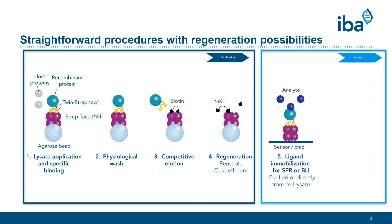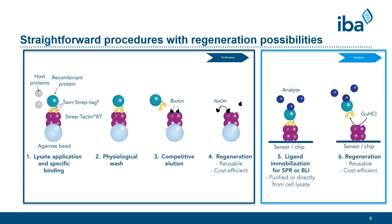The strong interaction between Streptactin XT and the twin-streptag can also be adapted for protein analysis, for example SPR. This technique can be used to determine protein properties such as affinity, concentration, interaction specificity, or binding kinetics. Again, the Streptactin XT coating on sensor chips can be regenerated for multiple uses, making the system convenient and cost-efficient. In addition, a dedicated purification step prior to analysis may be skipped, and the protein of interest can directly be studied from host cell lysate, saving valuable time while simplifying your protein analysis workflow.